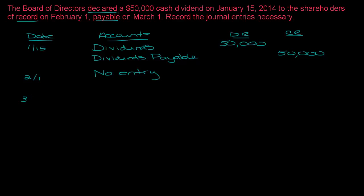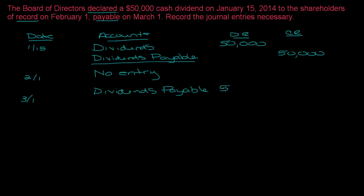On 3-1, the payment date, the dividend is actually going to be paid. We're paying off the Dividends Payable from 1-15, so we're reducing the amount of the liability — we're not recording the dividend again. If you recorded dividends again you'd have a $100,000 dividend, $50,000 still payable and $50,000 paid in cash. So instead we debit Dividends Payable $50,000 and credit Cash $50,000.